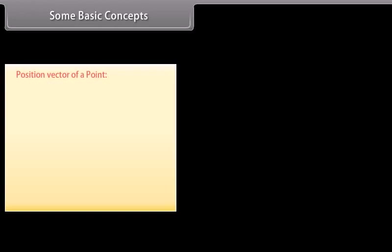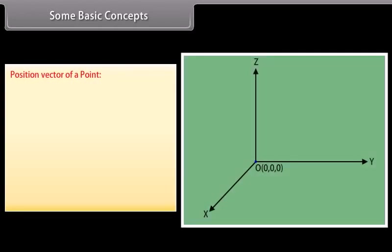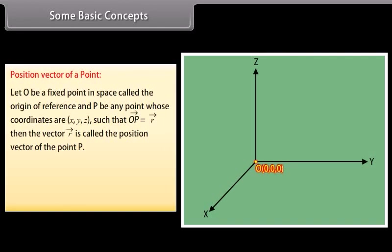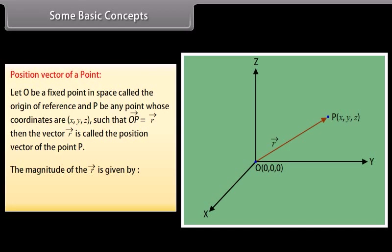Position vector of a point: Let O be a fixed point in space called the origin of reference, and P be any point whose coordinates are X, Y, Z such that vector OP equals vector R. Then the vector R is called the position vector of the point P. The magnitude of the vector R is given by: mode of vector R equals square root of X squared plus Y squared plus Z squared.